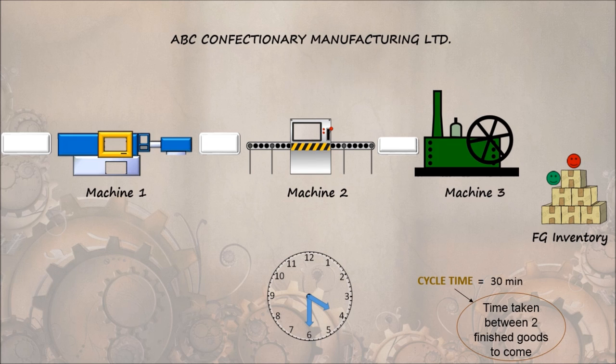So to sum up, throughput time is for the first product, and then on every product comes after cycle time.